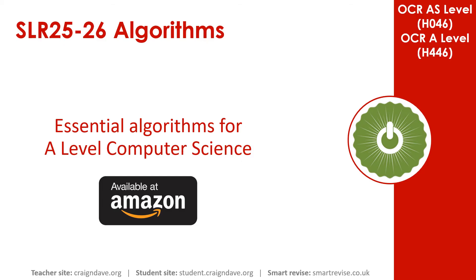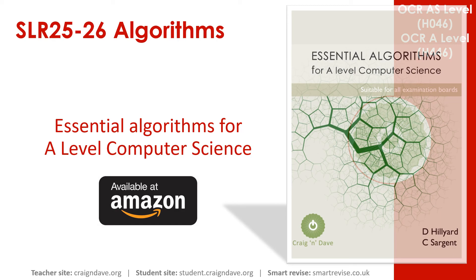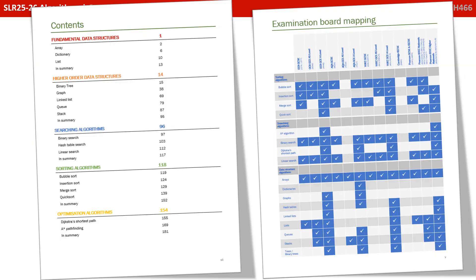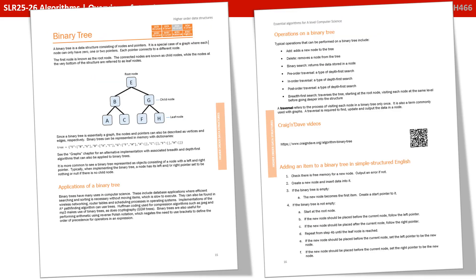We know that getting to grips with data structures and all the algorithms associated with them is a very tricky area of the course. And so we've produced a book called Essential Algorithms for A-Level Computer Science that's available on Amazon. It covers all the data structures you need to know about, along with the algorithms you need to perform on them. And it covers all the exam boards.